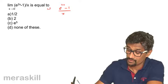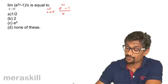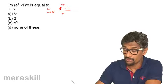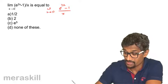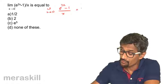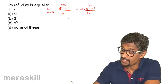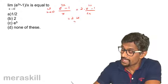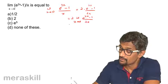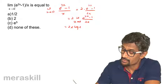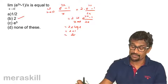Now if you remember this formula, e has been raised to a particular term containing x, and the denominator has to be the same term. Here it's 2x, so we need 2x in the denominator too. We multiply by 2, and this becomes 2 times the limit as x tends to 0 of (e^(2x) - 1)/(2x), which is 2 times log e to the base e, which equals 2 into 1, giving us 2.